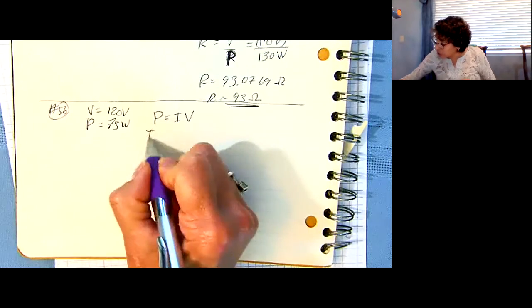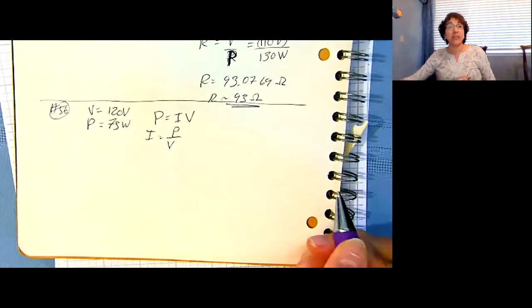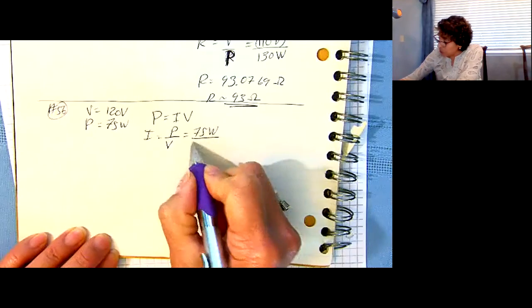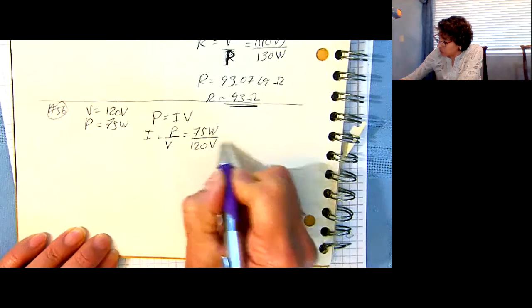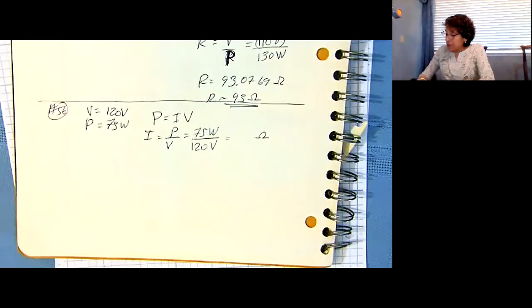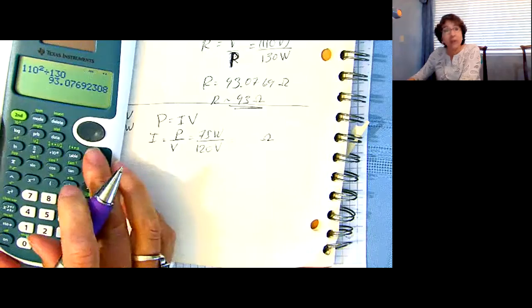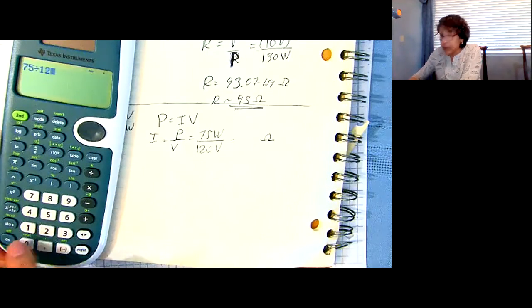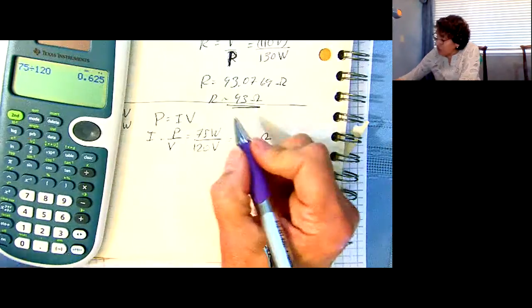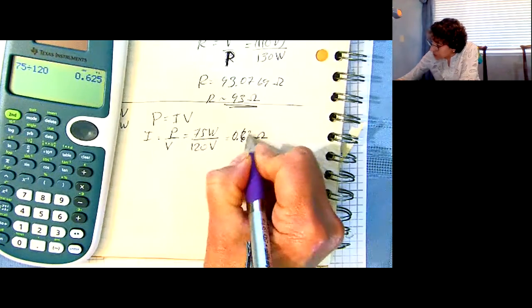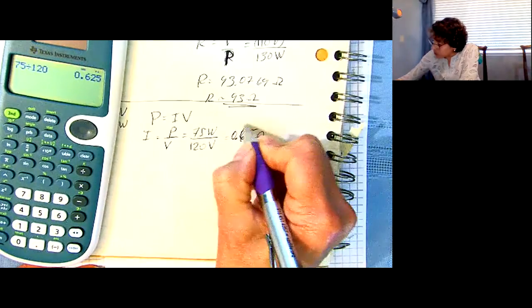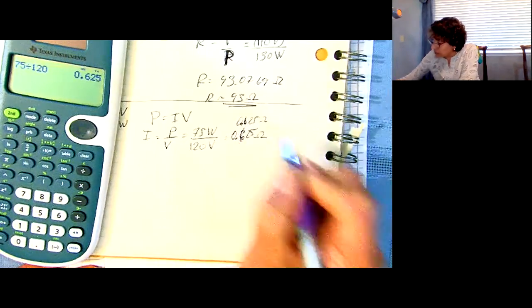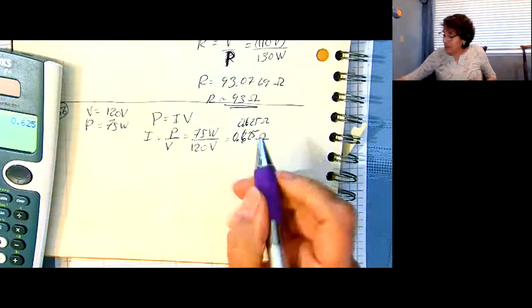P equals IV. That's convenient, because I got the power, and I got the voltage, I just need the current, so divide V to both sides, and I have that the current is the power divided by the voltage. So I have 75 watts divided by the voltage, 120 volts, and I know I'm going to end up with amps. 75 divided by 120, 0.625 amps. This is going to be 625 milliamps.